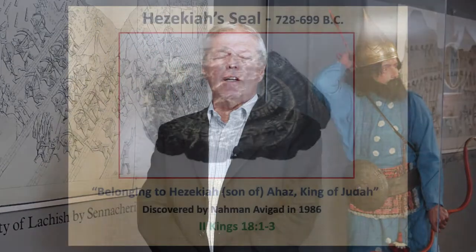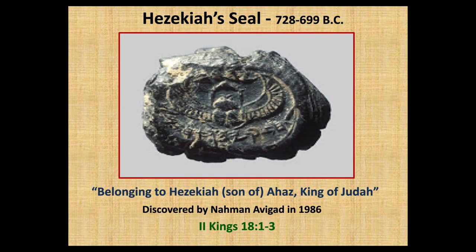Also from the time of King Hezekiah, a seal with his name was found in 1986. It says, 'Belonging to Hezekiah, son of Ahaz, king of Judah.' Again, an amazing confirmation of a king of Israel — King Hezekiah, one of the good kings who tried to reform and bring Israel back to the way of God.